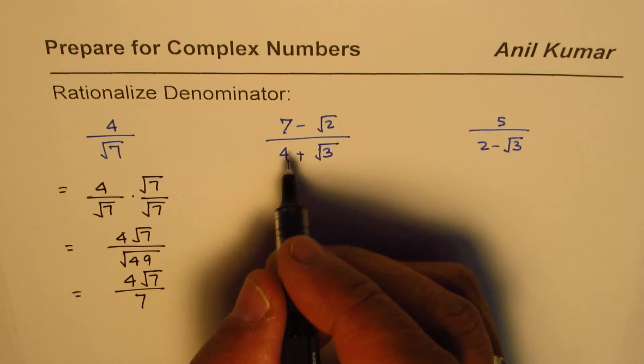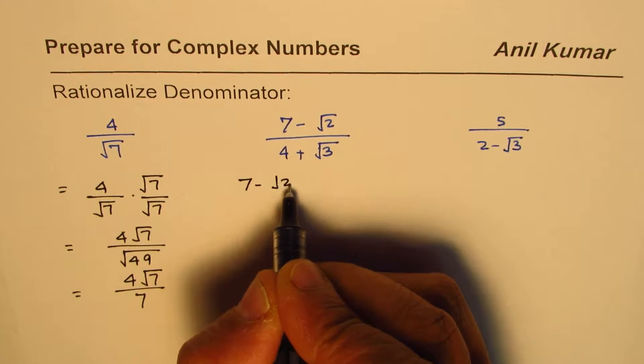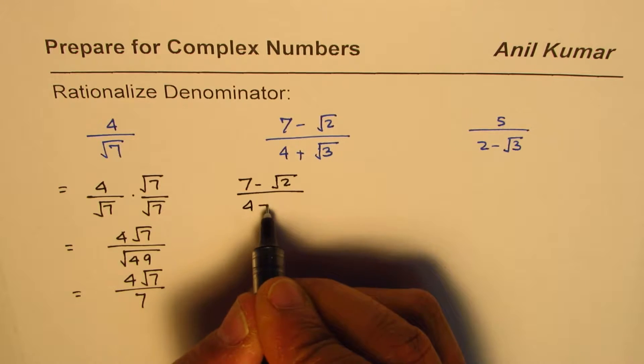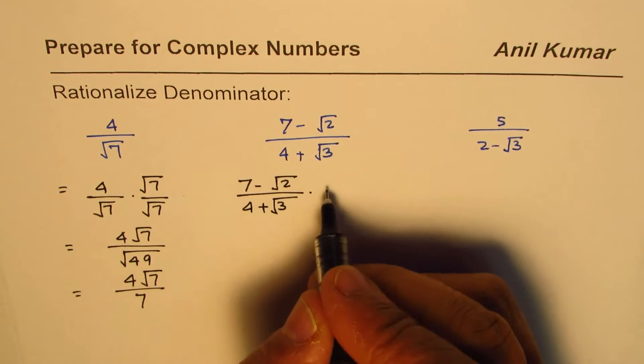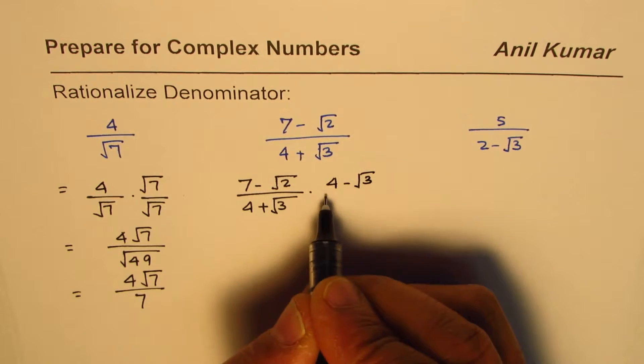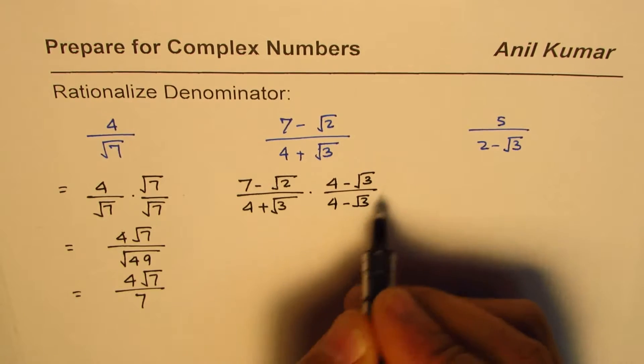Now if we have kind of a binomial type of thing here, in that case what do we do? In that case we multiply and divide by its conjugate. So we have 4 plus square root of 3, the conjugate is change this number—change the sign—so the plus becomes minus. 4 minus square root of 3, that becomes the conjugate.